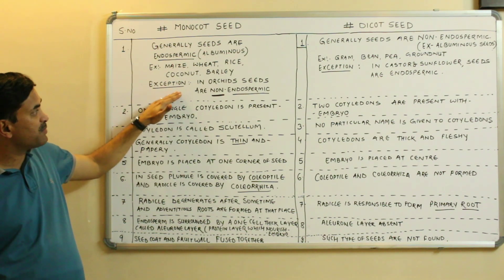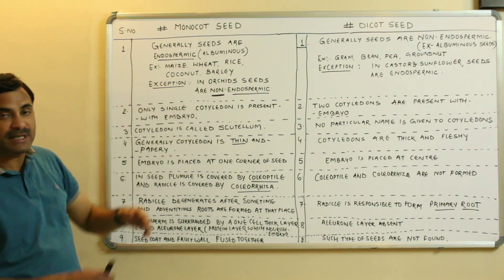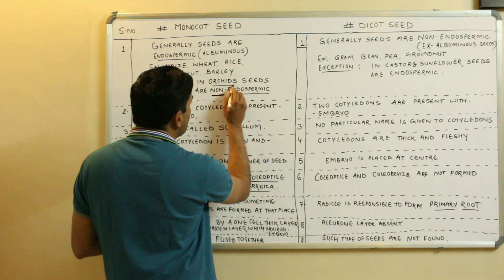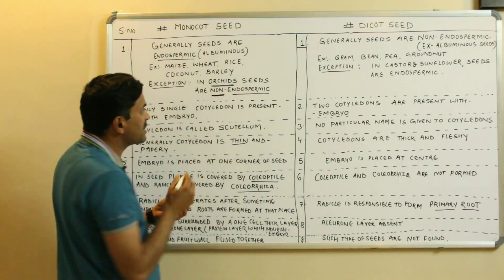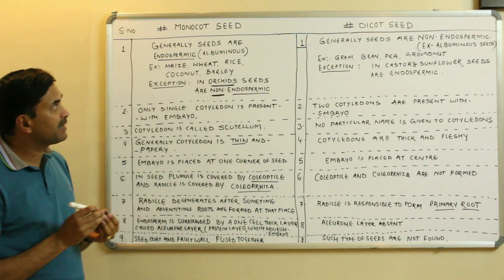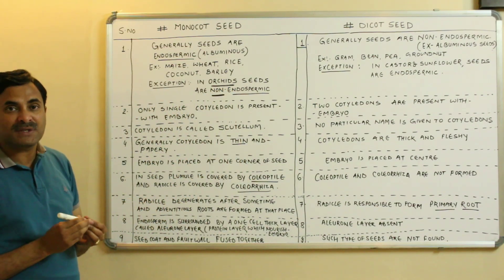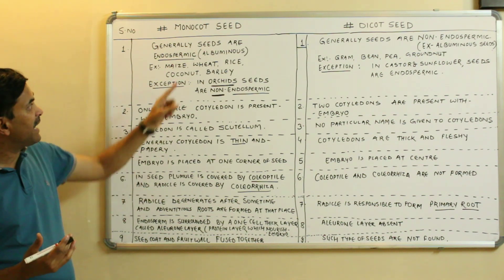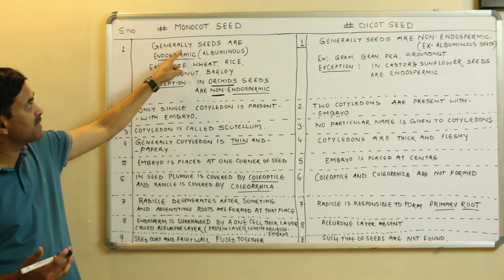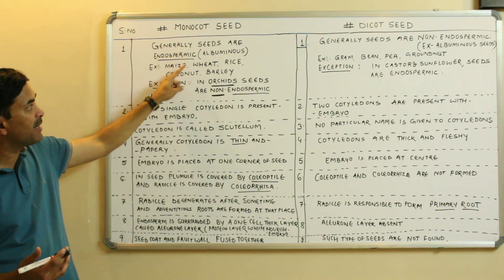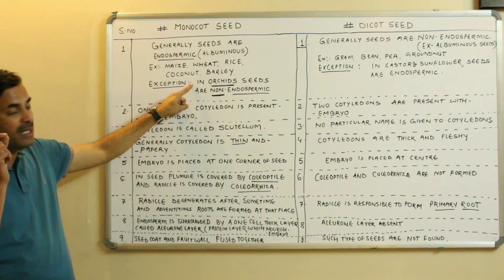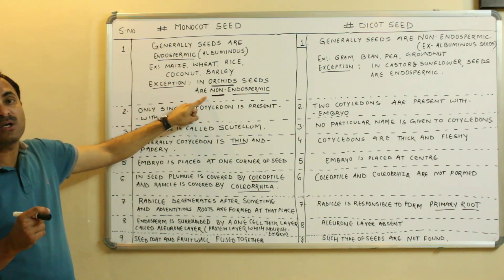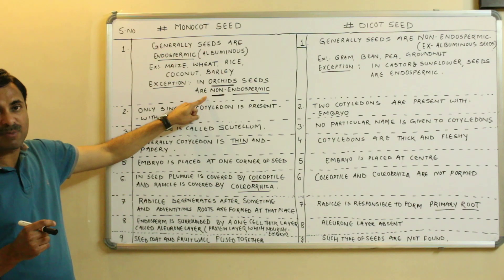However, there are exceptions. In orchids — and this has been asked in exams — the monocot seeds are non-endospermic. So while monocot seeds are generally endospermic, orchids are an important exception where the seeds are non-endospermic.